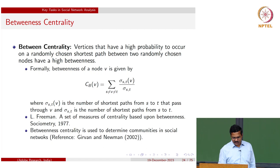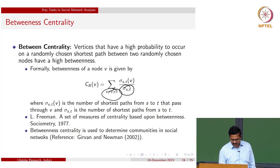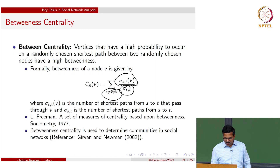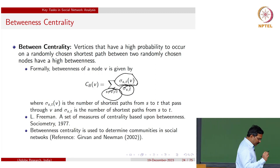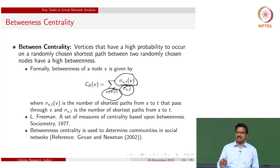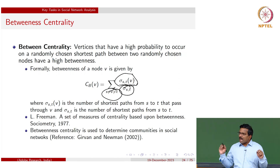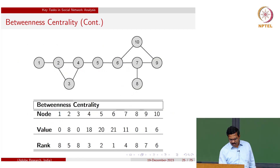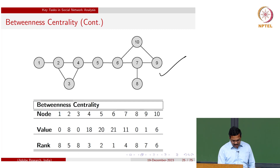For betweenness centrality, for all S-T pairs you look at all possible shortest paths between S and T, and among all those shortest paths, how many contain node V. That ratio summed over all possible S-T pairs is the betweenness centrality. In other words, the probability with which a particular node or edge appears on the shortest path between any arbitrary pair of nodes.